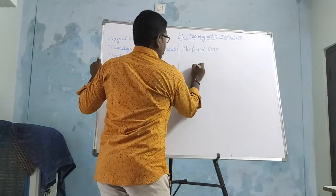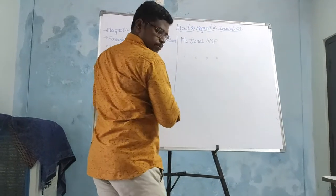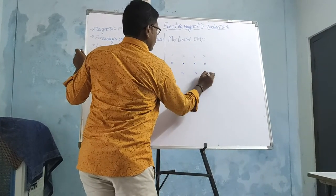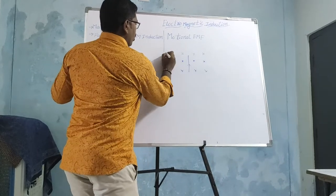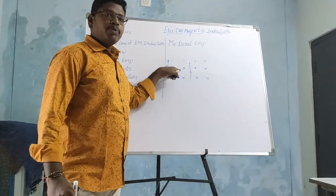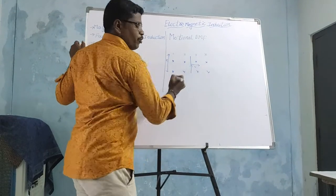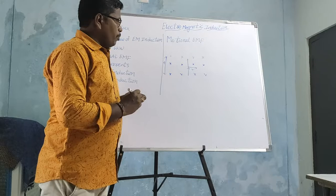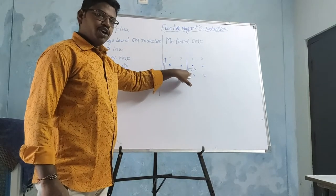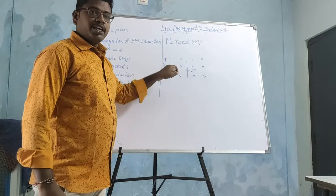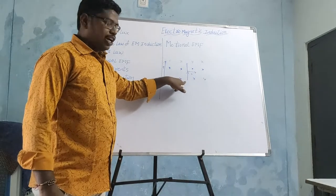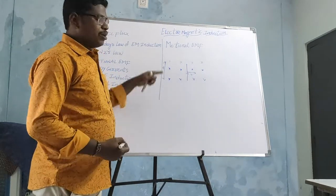For example, I am taking here a magnetic field. In this magnetic field I am taking a conductor of length L. Whenever a conductor is placed in a magnetic field perpendicularly and this conductor is moving with velocity V, the relative motion between the conductor and magnetic field is called motional EMF.